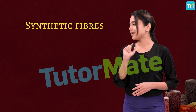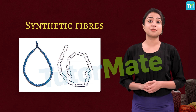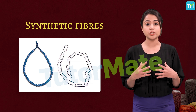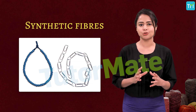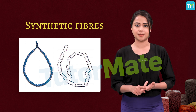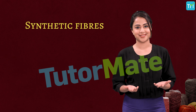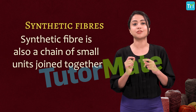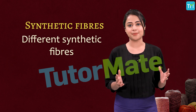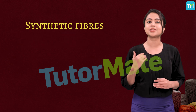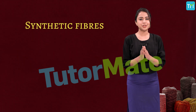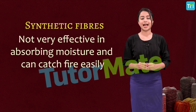Take a look at these two necklaces. The first one is made of beads that are joined with the help of a thread, and the second one is made of a number of paper clips joined together to make a long chain. Both these necklaces are actually chains formed by linking small units — like beads and paper clips. Similarly, a synthetic fiber is also a chain of small units joined together. Each small unit is actually a chemical substance, so different synthetic fibers are made from different chemicals and each kind has its own distinct property. These fibers are usually long and durable, but not very effective at absorbing moisture and can easily catch fire.